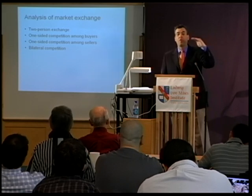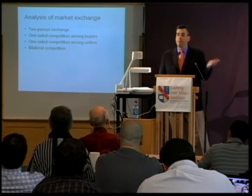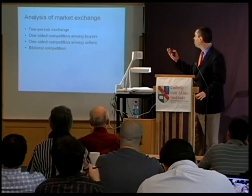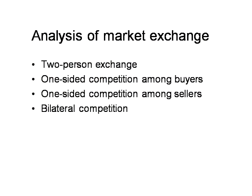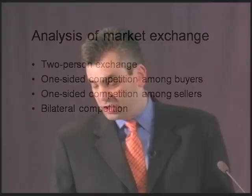Here's what we're going to do: we'll walk through a series of different scenarios from the most simple to the most complicated. We'll start with a simple case of two-person exchange, then go on to a setting with many potential buyers of one single commodity — think of an auction, like an art market. Then we'll think about a situation with one buyer and multiple sellers competing for the same buyer, working our way up to an analysis of bilateral competition with multiple buyers and multiple sellers.